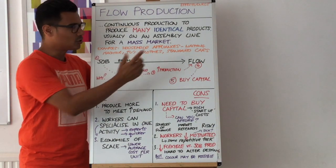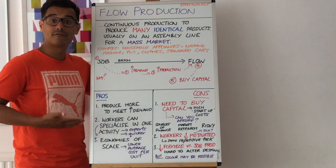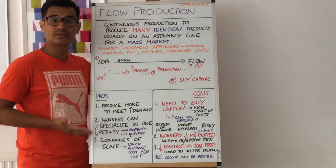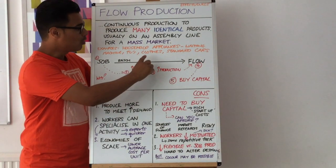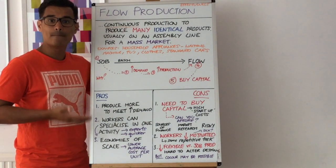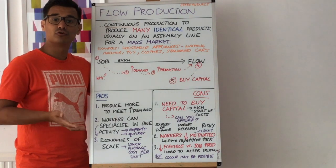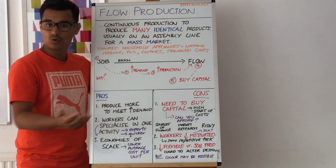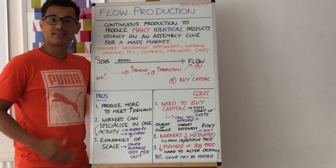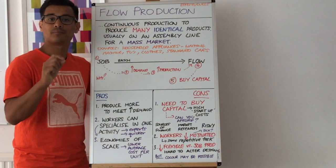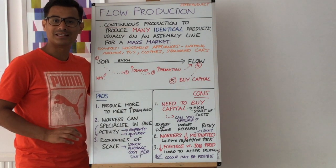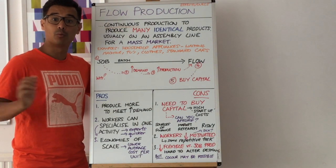Examples include household appliances — washing machines, TVs, ovens, fridges — all done on an assembly line. Also clothes that we see in Top Shop, Topman, Next, and H&M will be created through flow production. Standard cars that you see every day are also done through flow production, as opposed to custom-built cars tailored to particular needs, which are likely created through job production.